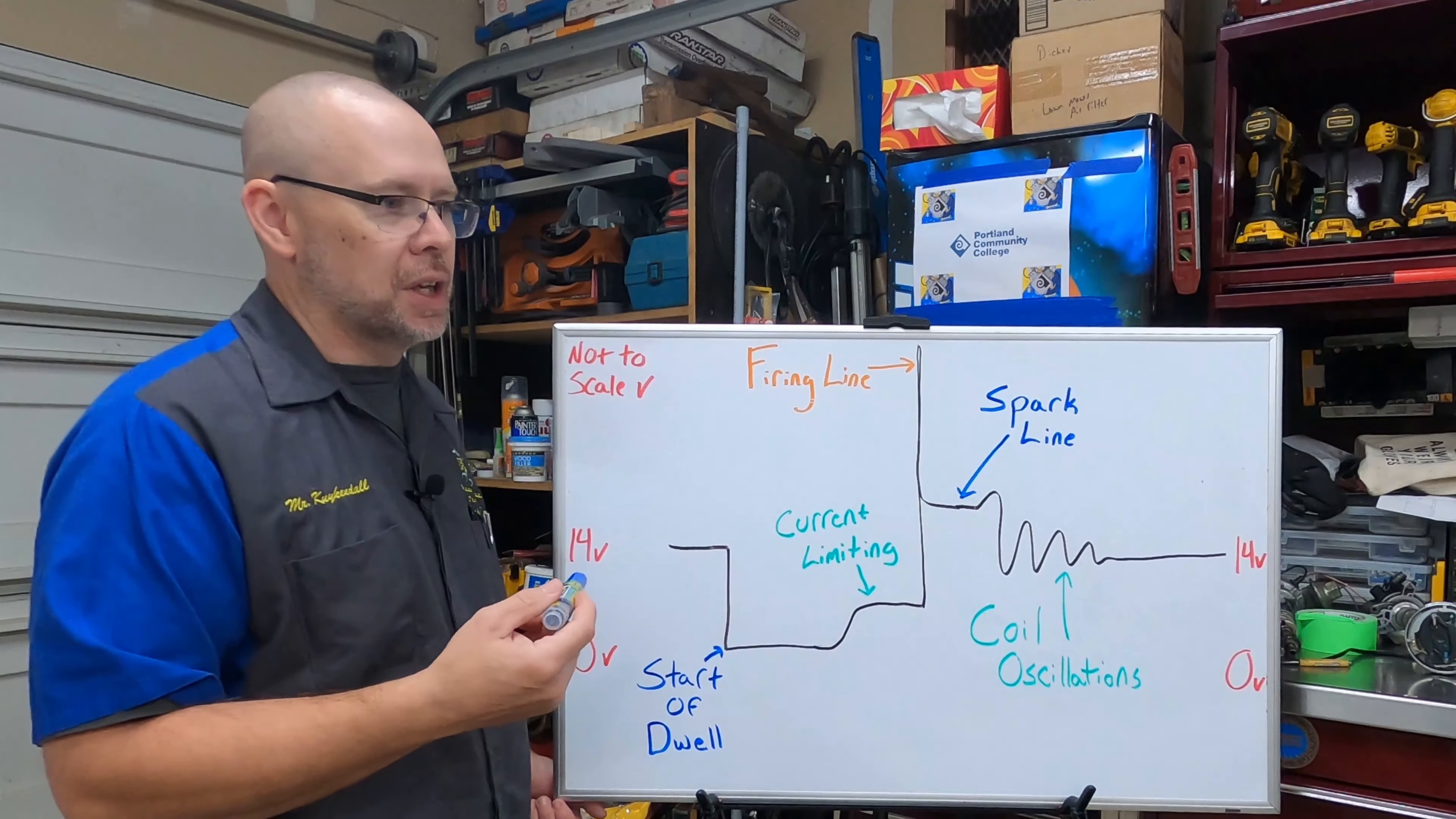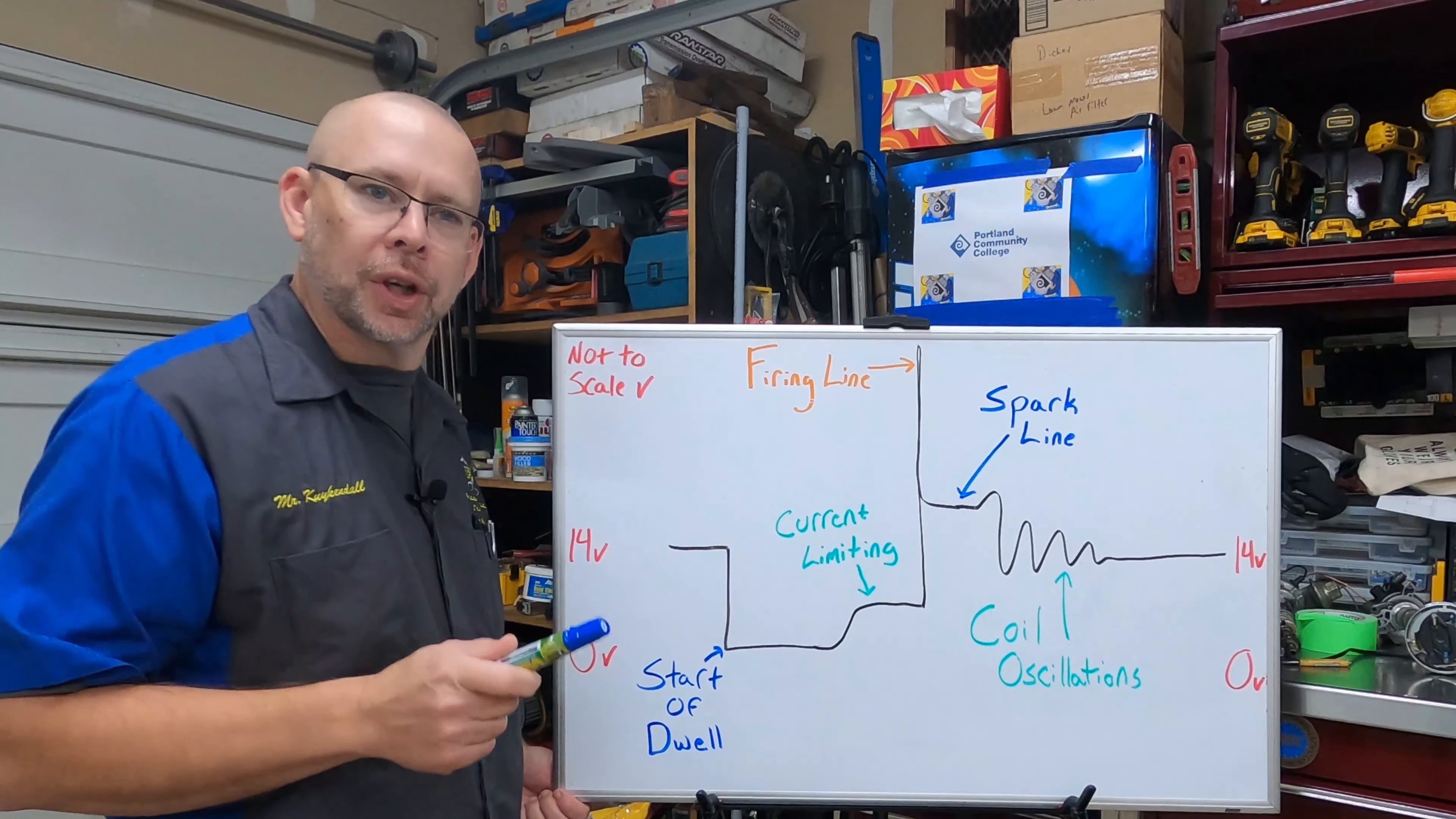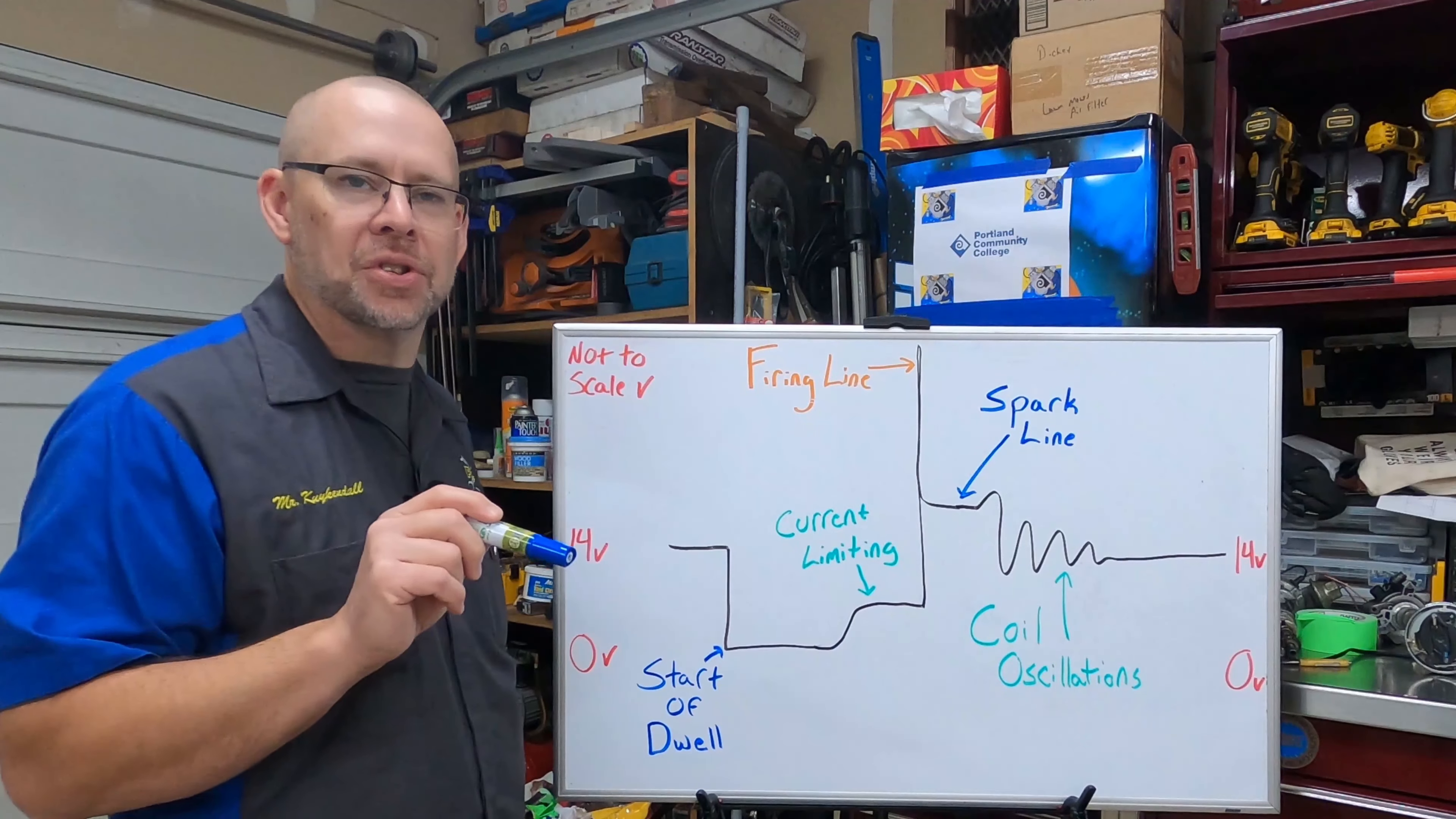We start at 14 volts, then we turn the switch on. We close the point contacts, we engage the transistor, whatever we do, we turn that switch on to carry current in the circuit. We're dropping low. Remember we are looking at this on the negative side of the coil because that's where the switch is being done.